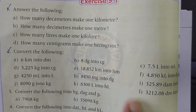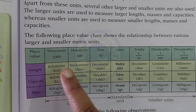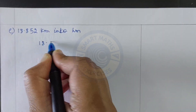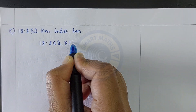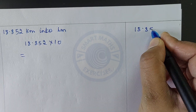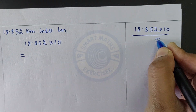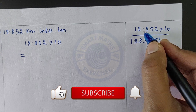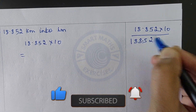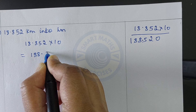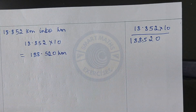Convert 18.852 kilometers into hectometers. We are converting from kilometer to hectometer — larger to smaller — so multiply by 10. Multiply 18.852 by 10: shift the decimal one place. The answer is 188.52 hm.